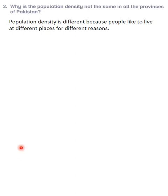The next question is very simple: why is population density not the same in all the provinces of Pakistan? Population density is different because people like to live in different places for different reasons — such as jobs, the atmosphere of that area, or their own preferences and requirements. This answer should be good enough.